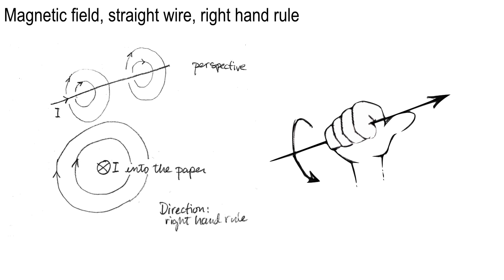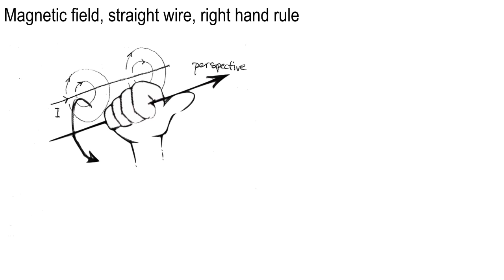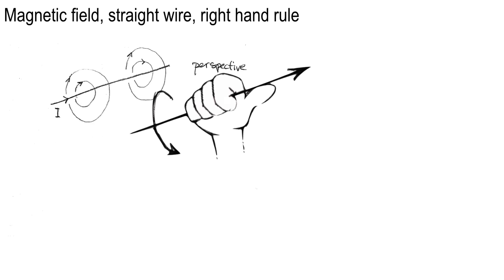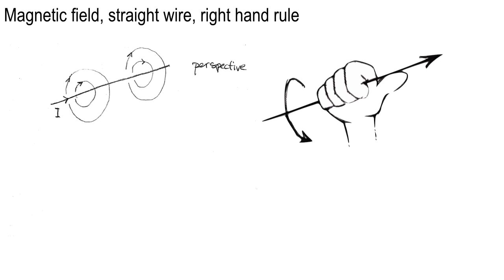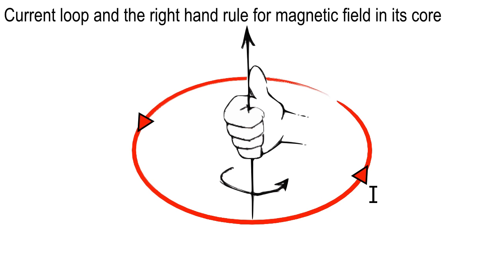The only time I help students on exams with the right hand rule is if I see somebody using the wrong hand — I'll say 'Other hand.' Here's the right hand rule: put your thumb in the direction of the current, and the direction of the field lines matches the curvature of your right-hand fingers. If you have a loop of current, the magnetic field at the very center is indicated by the thumb when you curl your fingers in the sense of the current.